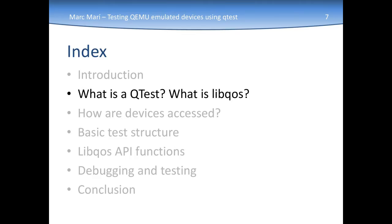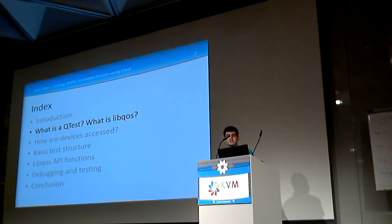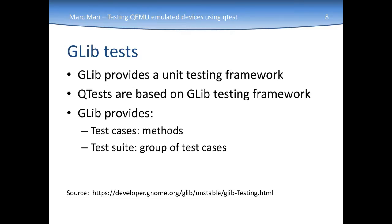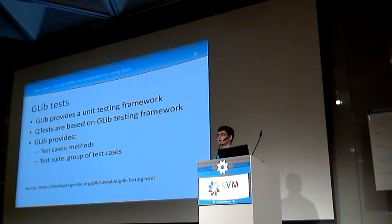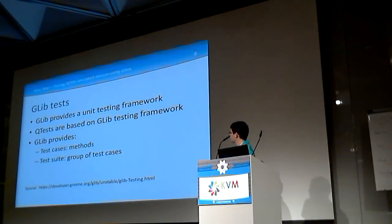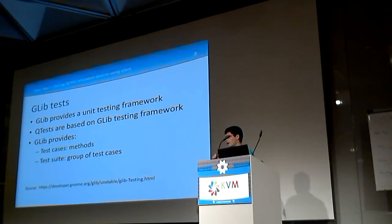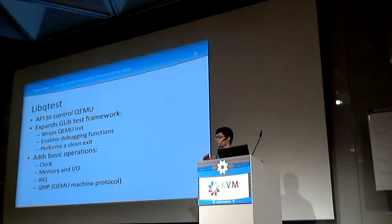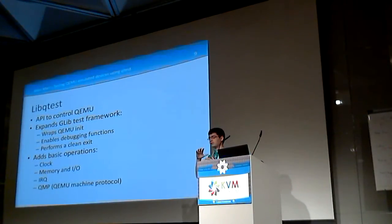Now that we see why Qtests are necessary, I'll talk about how they work. Qtests are based on the Glib framework. The Glib testing framework is a unit testing framework, such as JUnit for Java. It provides test cases, which are the actual methods that are run, and the test suite, which is a group of test cases or other test suites. On top of this framework, in QEMU has been built LibQTest, which expands this Glib framework and adds all the QEMU initialization, all the QEMU debugging functions, and all the QEMU cleanup.